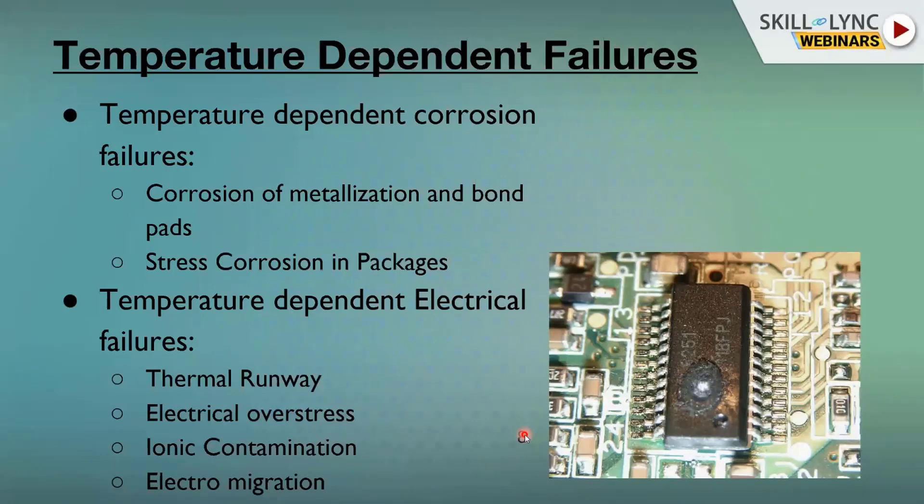After that we have electromigration, which is a very deep technical term. It is related to the micro effect of temperature on grain size. Whenever temperature is higher, electrons try to collide with the lattice structure. This is just mentioned for your knowledge and we will discuss this topic in more detail another day.